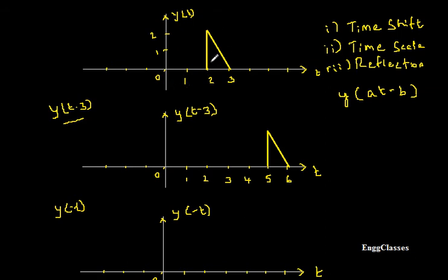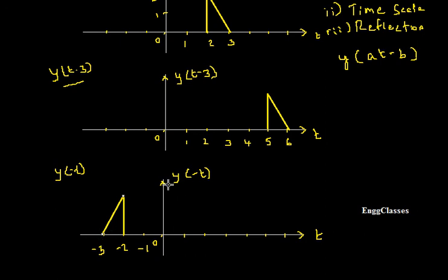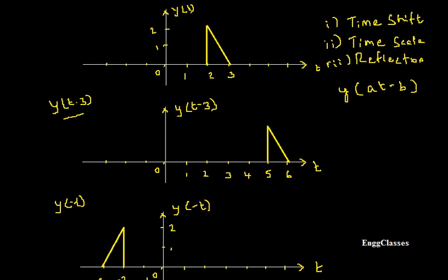This signal gets reflected along the vertical axis — it is the mirror image. Just keep the mirror on the y-axis to see how it looks. The limits 1, 2, 3 become minus 1, minus 2, minus 3 on the negative axis. So plus 2 and plus 3 become minus 2 and minus 3. The amplitude remains the same — 2 and 1. This is how y of minus t looks.